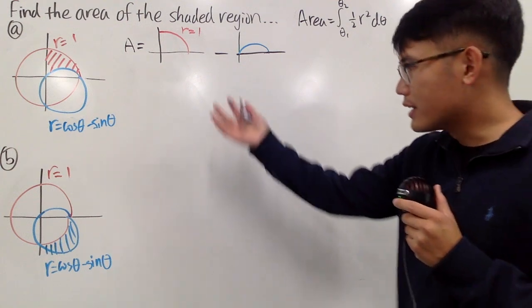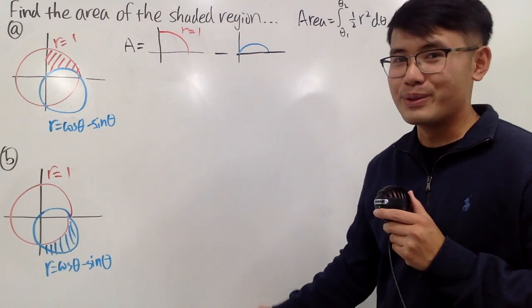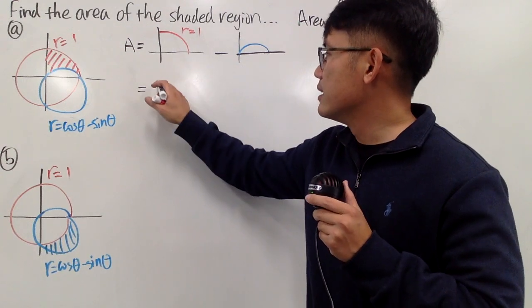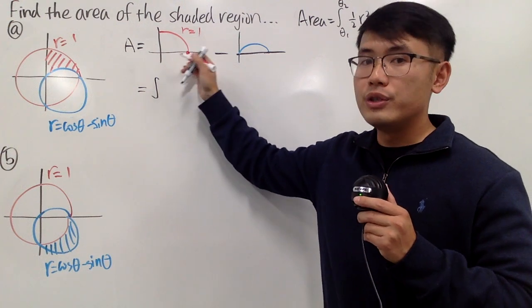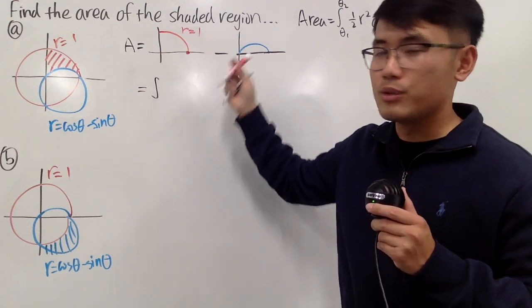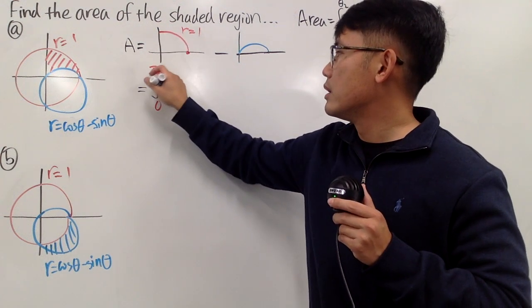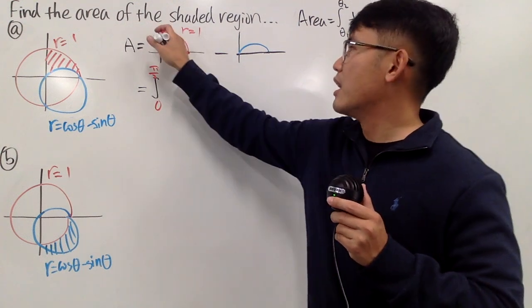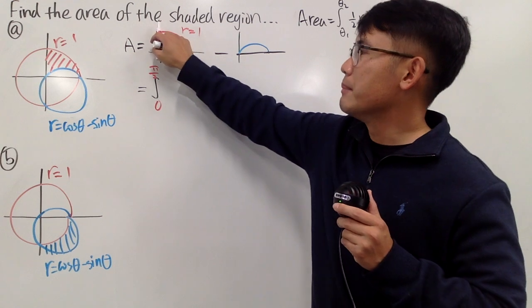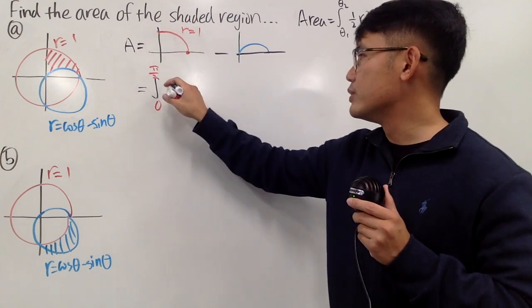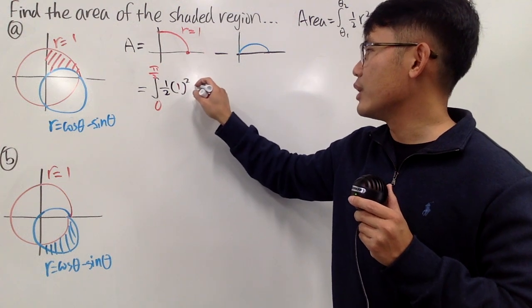For the quarter circle, no integration is strictly needed, but I will still do the integral. We go from theta equal to 0 to pi over 2. Nothing tricky, because this curve does not cross the origin at all. So theta goes from 0 to pi over 2. That's all. Now we can write: one-half, and the r is just 1, square that, and then d theta.